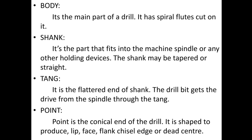Body: It is the main part of a drill. It has spiral flutes cut on it. Shank: It is the part that fits into the machine spindle or any other holding device. The shank may be tapered or straight.